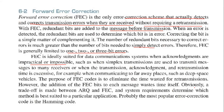For example, when communicating to far away places such as deep space vehicles, the purpose of FEC code is to eliminate the time wasted for retransmission. However, the addition of FEC bits to each message wastes time itself. Obviously, a trade-off between ARQ and FEC and system requirements determines which method is best suited to a particular application. Probably the most popular error correction code is Hamming code.